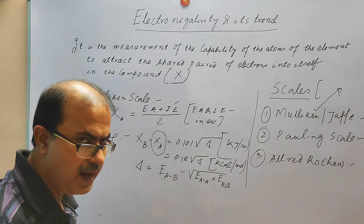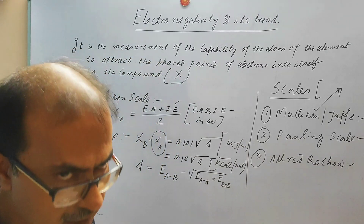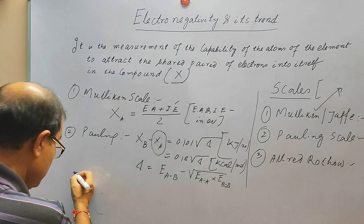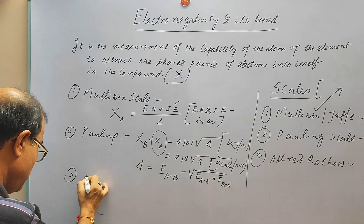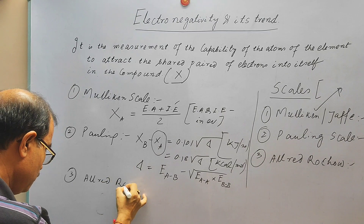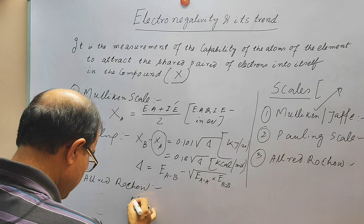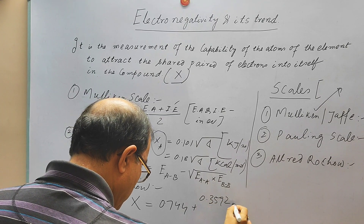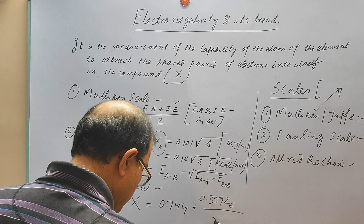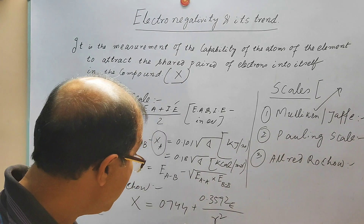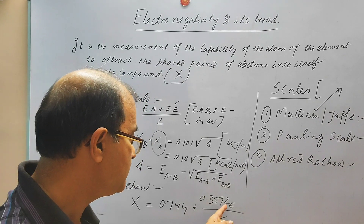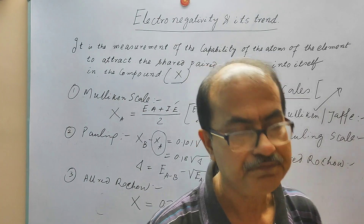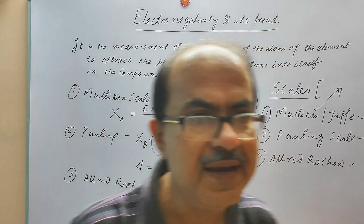On the Pauling scale, the electronegativity of hydrogen has been taken as 2.1, and the maximum electronegativity is found for fluorine. The third scale is the Allred-Rochow scale. In this scale, the electronegativity is derived from a formula based on covalent radii in angstroms and effective nuclear charge, along with a constant.